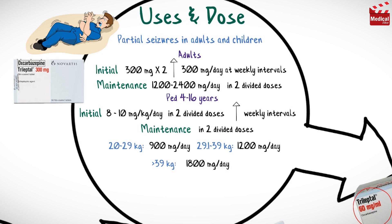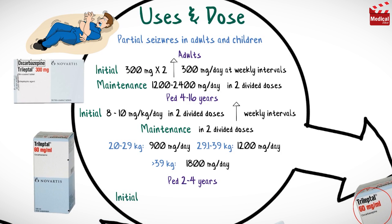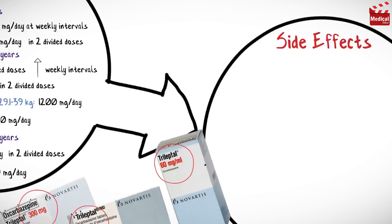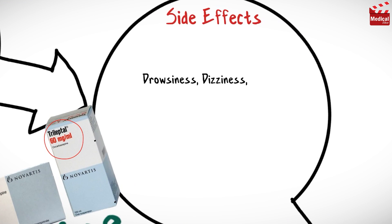For pediatrics from 2 to 4 years, the usual initial dose is 8 to 10 mg per kg per day in 2 divided doses, and the maximum dose is 600 mg per day.